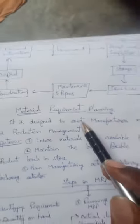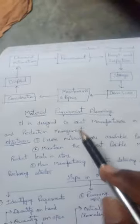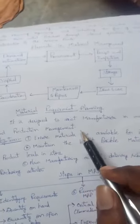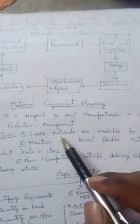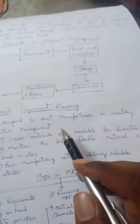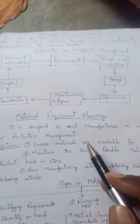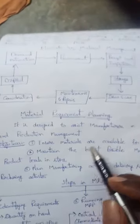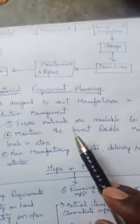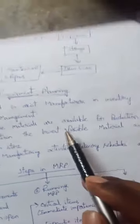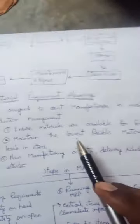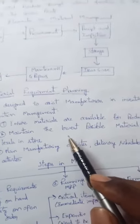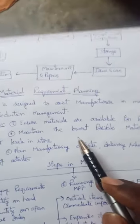In MRP — Material Requirement Planning — the concept is designed to assist the manufacturer with inventory for production management. It means that production management should identify how much raw materials are required in a production process. The objective is to identify availability of production as per the required production levels, and to maintain effective material requirement planning accordingly.